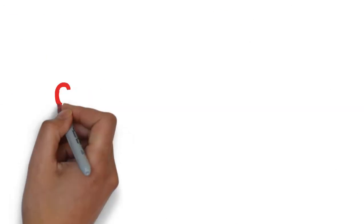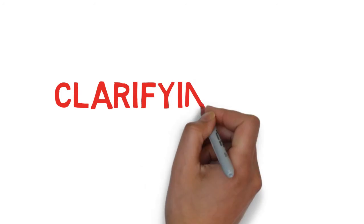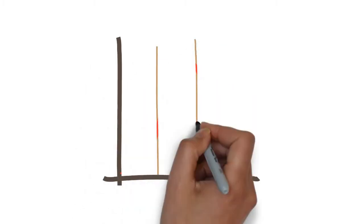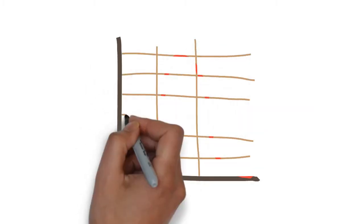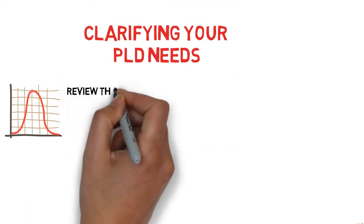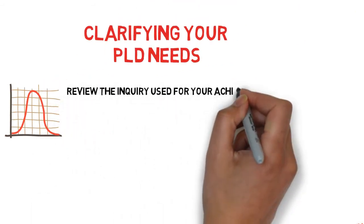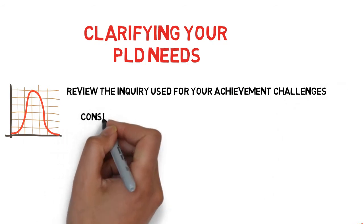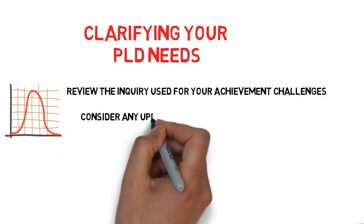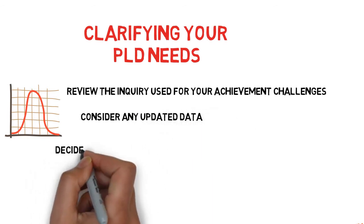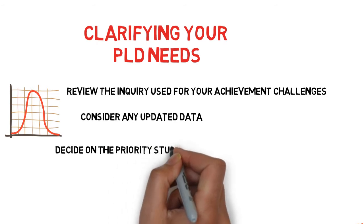Number one: clarifying your PLD needs. This is about working with your team on what area or areas you need PLD in. To do this, you can review the inquiry you undertook to identify your achievement challenges. Consider if there is any more information you may not have known about previously, such as information from parents, students, teachers, or other kā hui āko members, or some updated data that you can include.